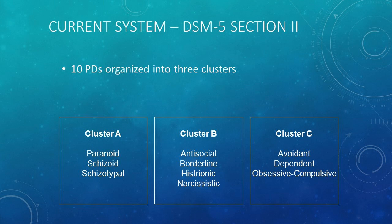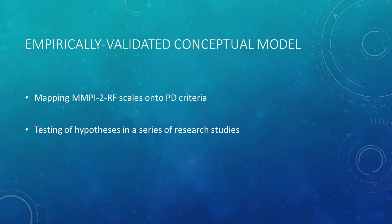Cluster B refers to personality disorders that tend to have emotional, dramatic, and erratic components — antisocial, borderline, histrionic, and narcissistic PDs. Cluster C are the anxious or fearful personality disorders: avoidant, dependent, and obsessive-compulsive. We're going to talk about each of these personality disorders with respect to the MMPI-2-RF, showing a disorder-by-disorder mapping of MMPI-2-RF scales onto the specific criteria that underlie these different disorders.